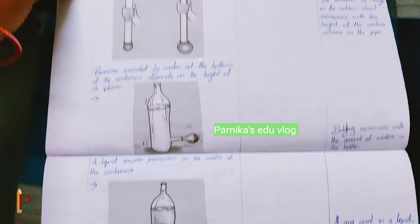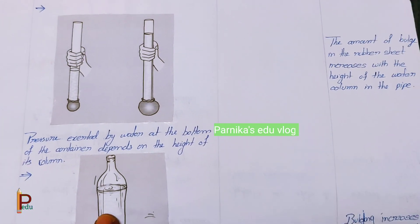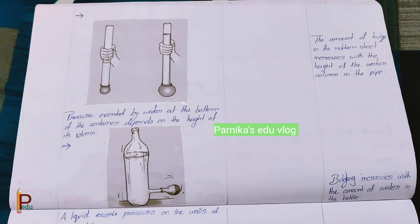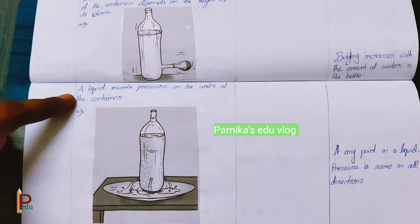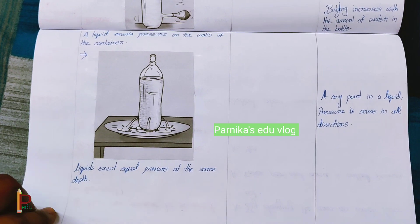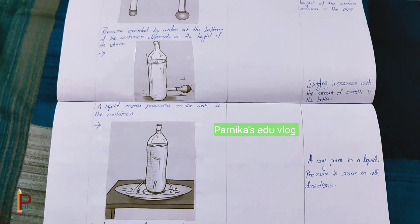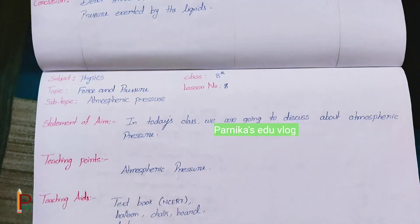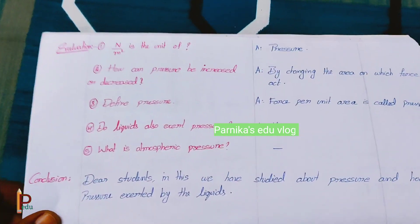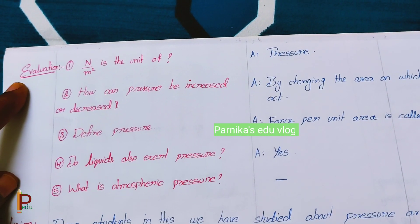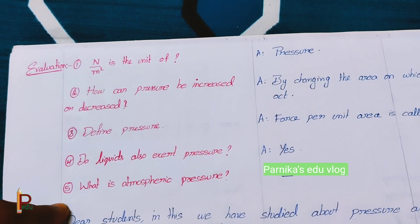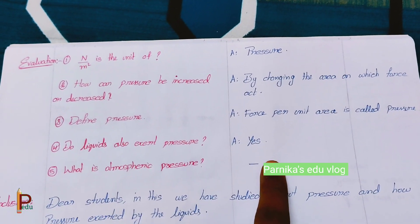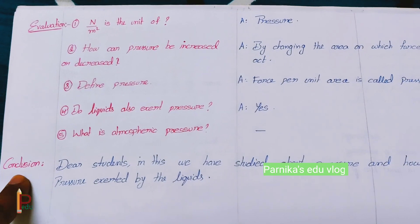To understand this topic we can conduct a few activities. Totally we have three CBSE activities — first one, second one, and third one. Third one is: liquid exerts equal pressure at the same depth. These are the activities we have to show in class itself. Finally, evaluation — these are the questions and expected answers — and finally conclusion.